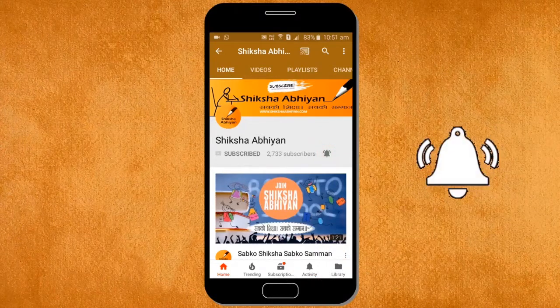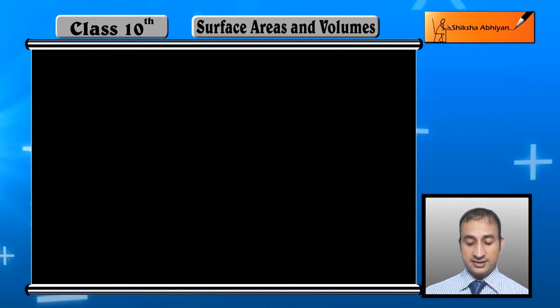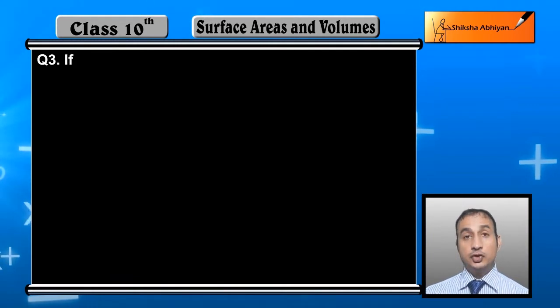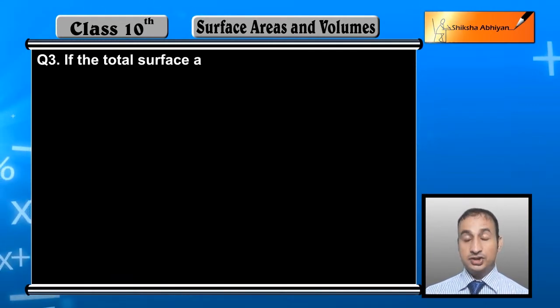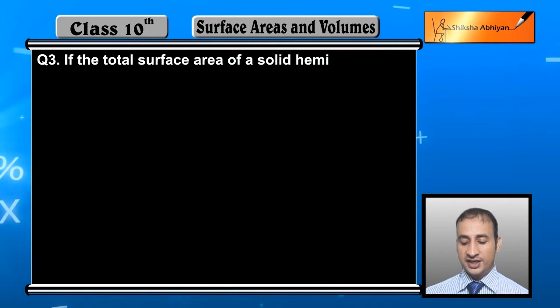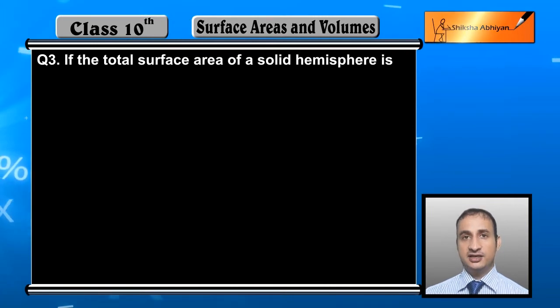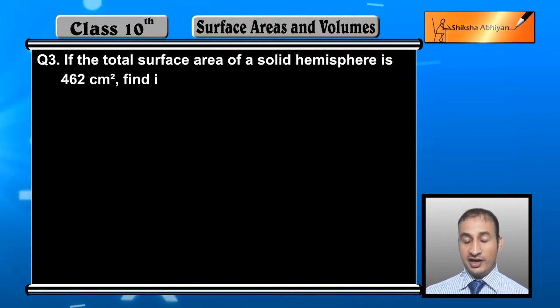The next question is: if the total surface area of a solid hemisphere is 462 centimeter square, find its volume.